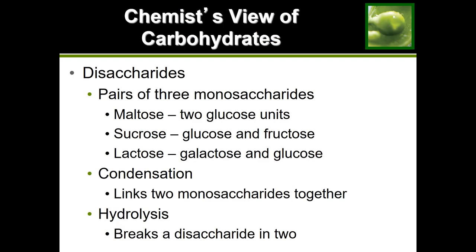Joining more than one monosaccharide together forms disaccharides. We have three: starting with maltose, which is two glucose units linked together. Sucrose is glucose and fructose linked together — this is what we refer to as table sugar, the sugar you add to your coffee. And then the last disaccharide is lactose, which is galactose and glucose combined together. Galactose isn't usually found on its own; it's usually part of lactose, which is our milk sugar, most commonly found in dairy products.